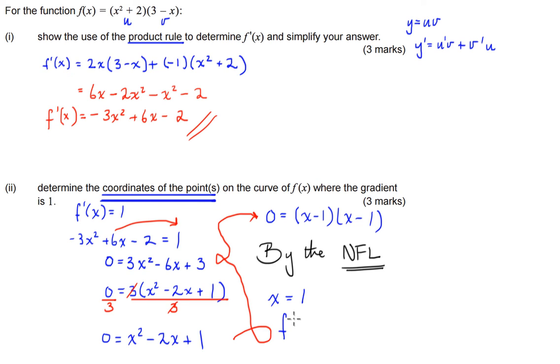So we're just going to substitute 1 into the original equation. We're just going to find f of 1, and that's equal to 1 plus 2 is 3, 3 minus 1 is 2, 3 times 2 is 6. So the coordinates of the point, therefore f dash of x equals 1 at 1 comma 6.